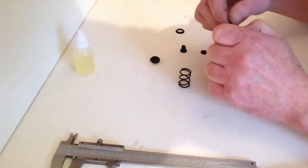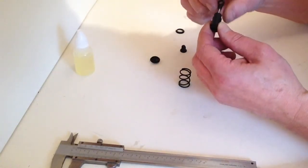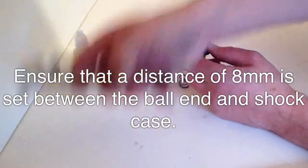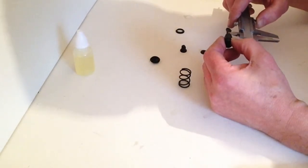Now with that all the way done, get some nose pliers and what we want to do is aim for a gap of 8mm from there to there. So take a vernier and measure at 8mm to make sure you have got that right.